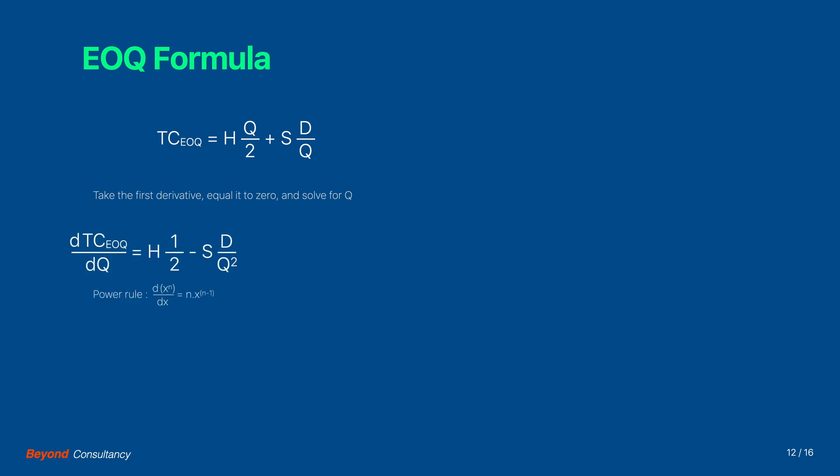To find the derivative we apply the so-called power rule. In the first term, the derivative of Q is 1. In the second term, the 1 over Q can be thought of as Q to the power of minus 1, and its derivative is minus Q to the power of minus 2. We now equal this function to zero and bring the negative term to the other side of the equal sign. We then multiply both terms by Q, which results in an equation where, in fact, the inventory costs equal the ordering costs at the optimal point.